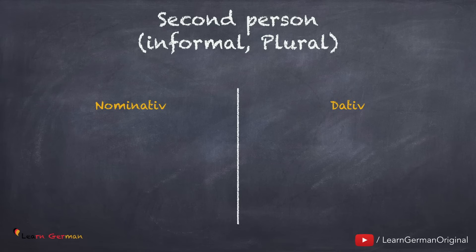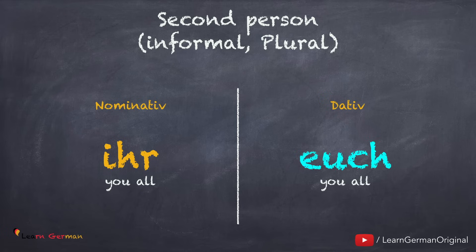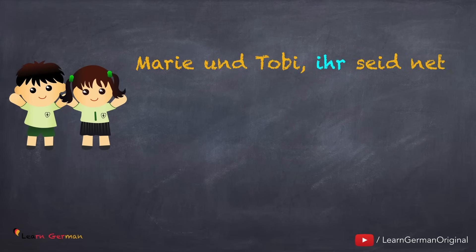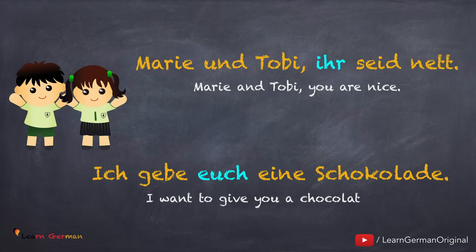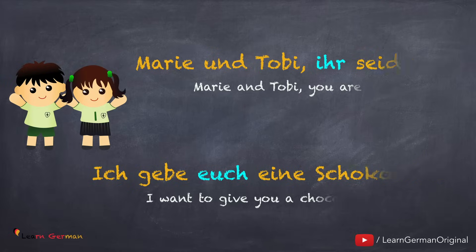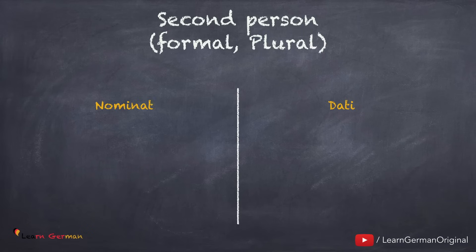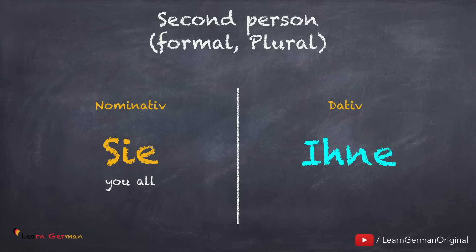Moving on to second person informal plural: in Nominativ that is ihr, and in dative euch. Let's see how to use them in a sentence. 'Marie und Toby...' Third person plural formal: in Dativ it's Sie, and in Dativ it's Ihnen.